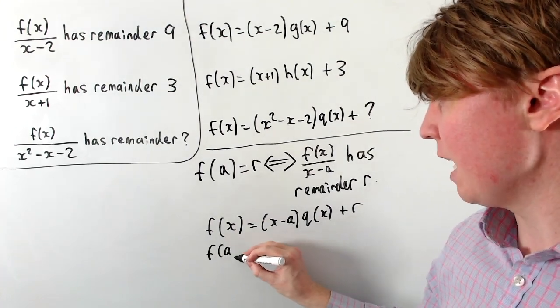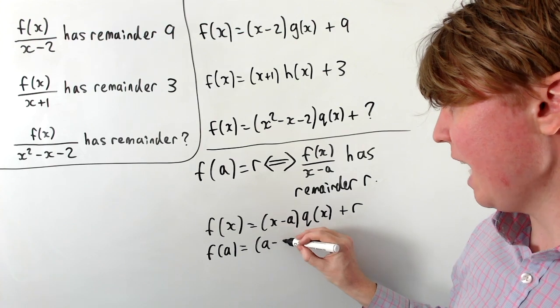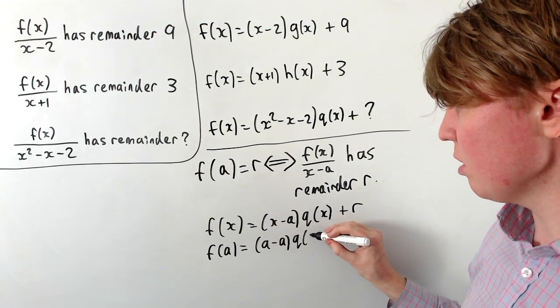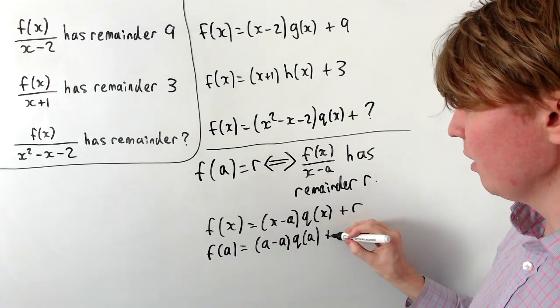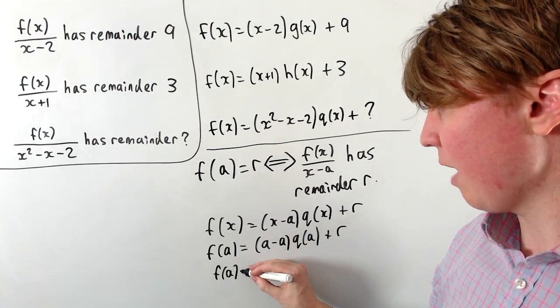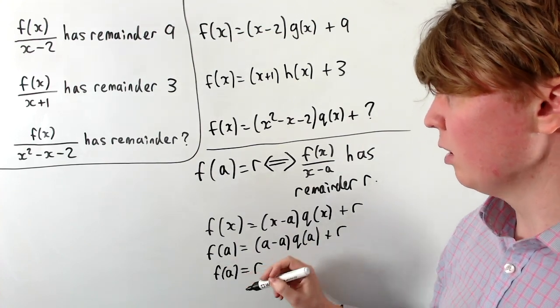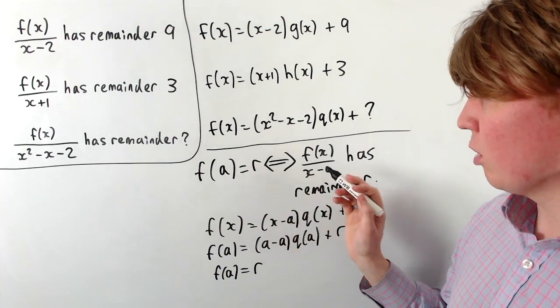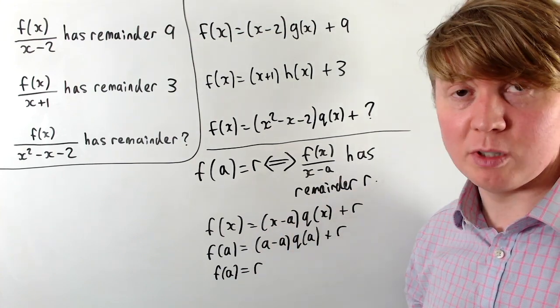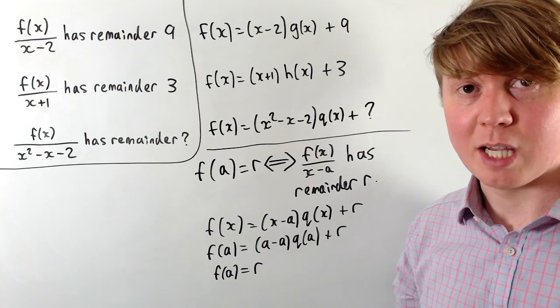So we get f(a) equals, we've just got a minus a, which is 0, so this term all vanishes times q(a) plus r. So then we do indeed get just f(a) equals r. So you can see that f(a) equals r is equivalent to having a remainder r when we divide our function by x minus a.